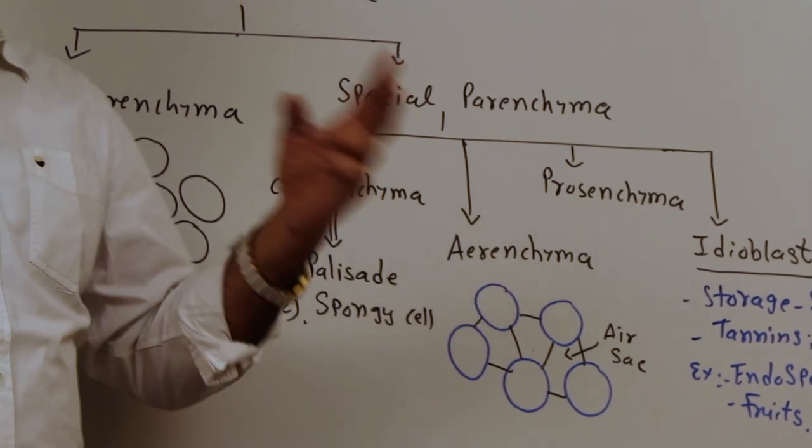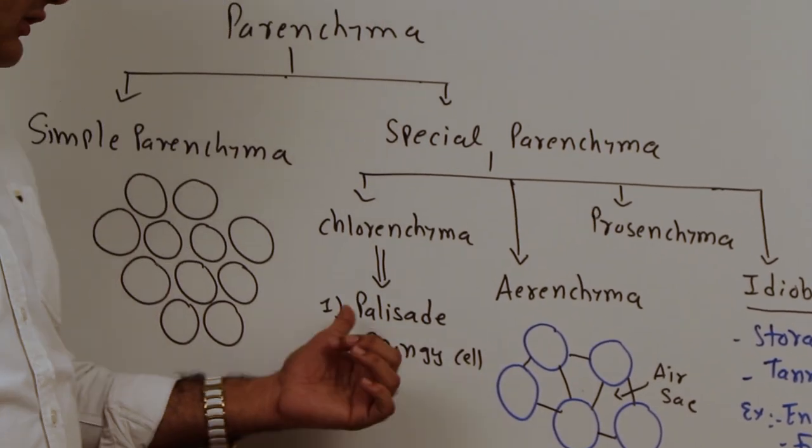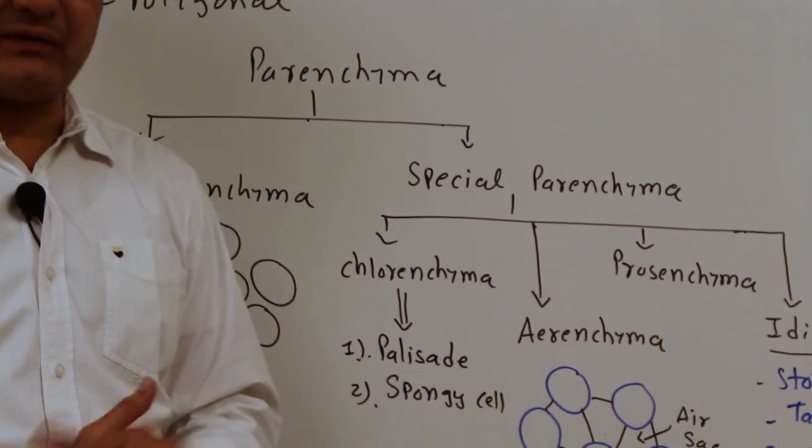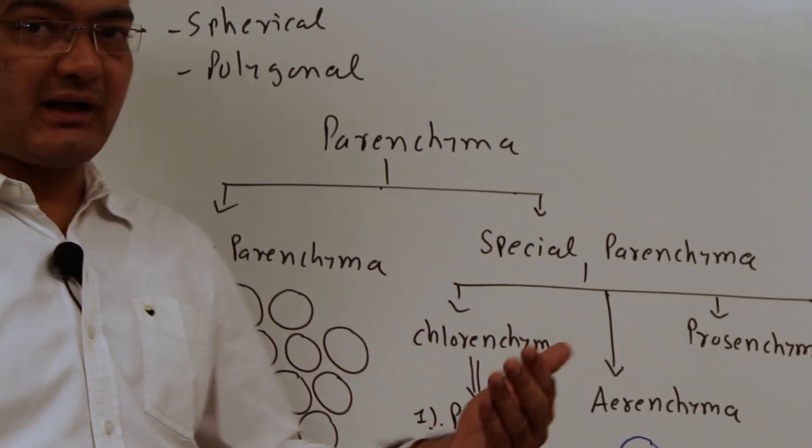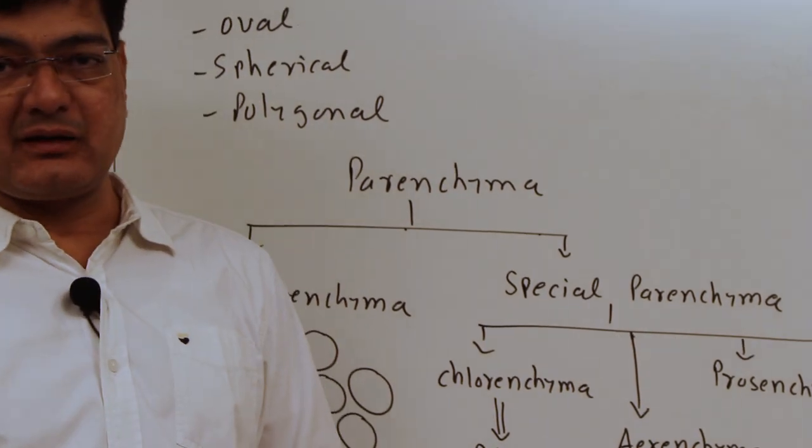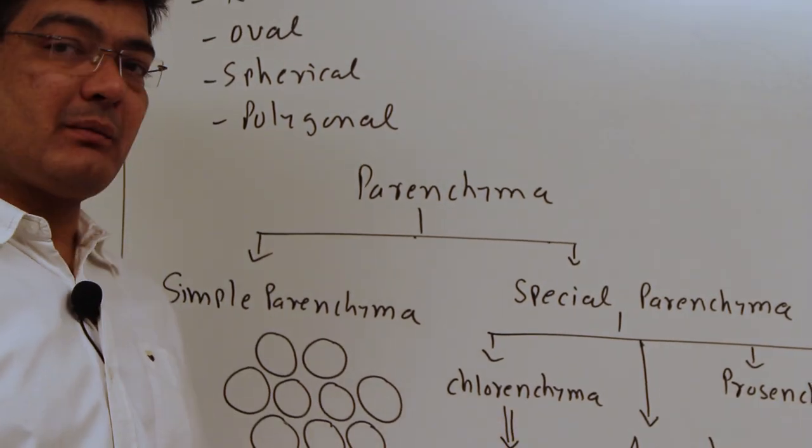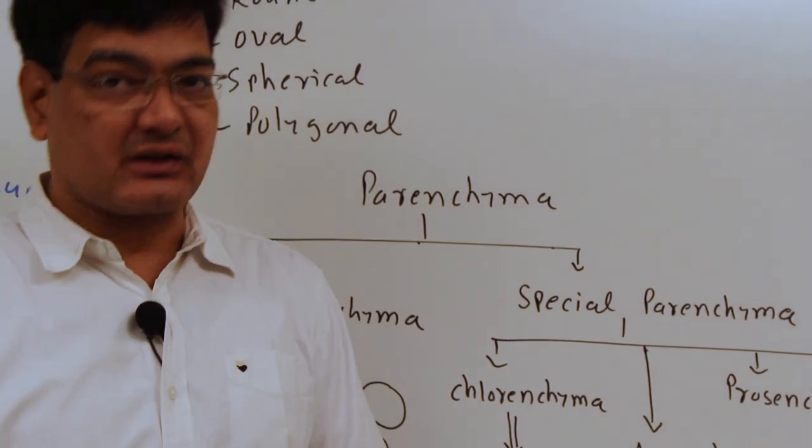Chlorenchyma has two different kinds of cells. Palisade and spongy cells are found. Palisade cells are cylindrical, whereas spongy cells are isodiametric in shape. In some cases like monocot leaves, the chlorenchyma appears as a polygonal structure.